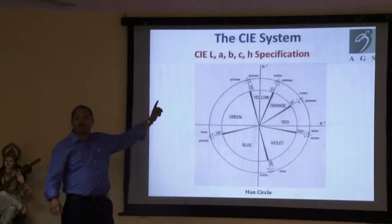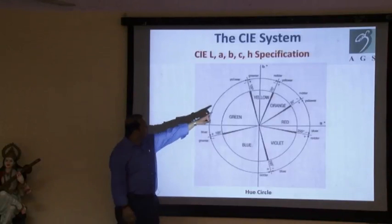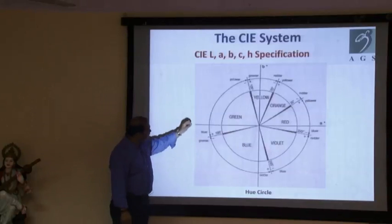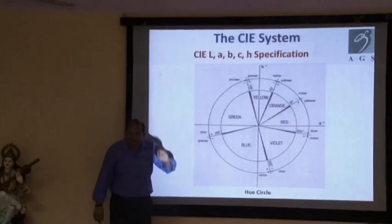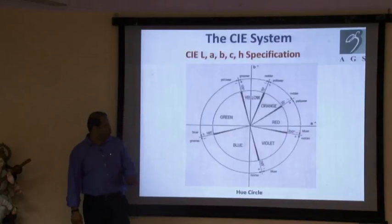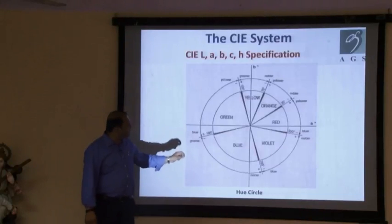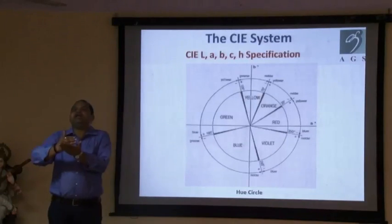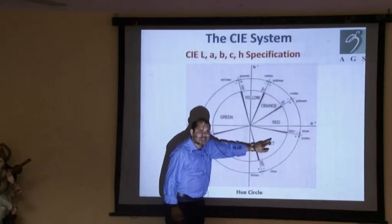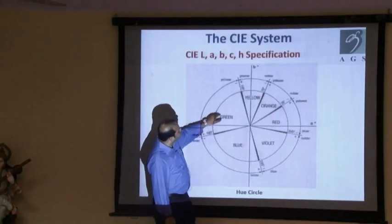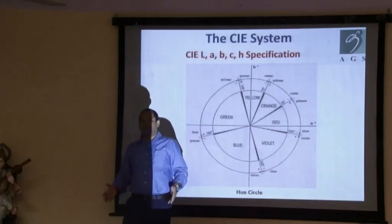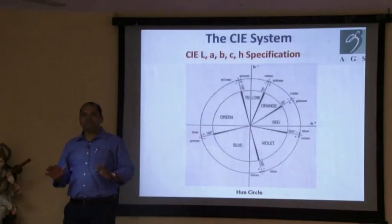As a thumb rule, just blindly follow it: any red color that you measure on earth — its hue angle will be between 350 to 35 degrees. 35 to 70 will be orange. 70 to 105 degrees will be yellow. 105 to 195 will be green. 195 to 285 will be blue. And 285 to 350 is basically violet and indigo. So: Violet, Indigo, Blue, Green, Yellow, Orange, Red — that's VIBGYOR.